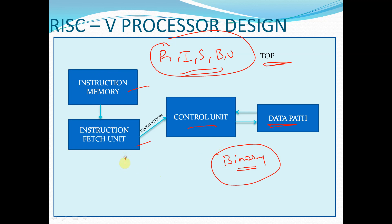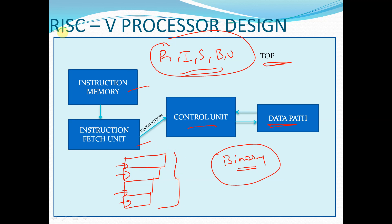One example of an R type instruction will be stored in a memory location, and an I type instruction example will be stored in a subsequent or sequential memory location. Similarly, S type and branch type instructions will be stored in other memory locations. Every instruction is already present inside this instruction memory. This instruction memory will act as a ROM — read only memory — we cannot write into it; we can only read from it using the instruction fetch unit.